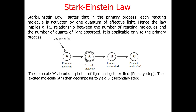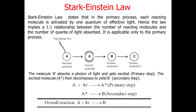Molecule A absorbs a photon of light and gets excited in the primary process. The excited molecule A* then decomposes to produce the corresponding B molecule through the secondary step process. We can divide the reaction into two kinds: the first step is the primary state, where A reacts in the presence of a photon and goes to A* — the primary photochemical process. In the excited state A*, it goes to product B, either in a single step or through multiple steps with different intermediates in the secondary step.